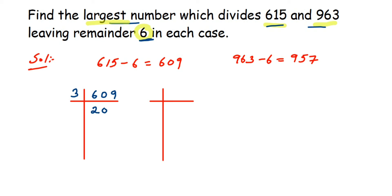The next number is 203. It doesn't go into the 5-times table, so we try 7: 7 times 2 is 14, the remainder makes the number 63, and 7 times 9 is 63. That gives us 29, which is a prime number — 29 times 1 is 29. So 609 is fully factored.